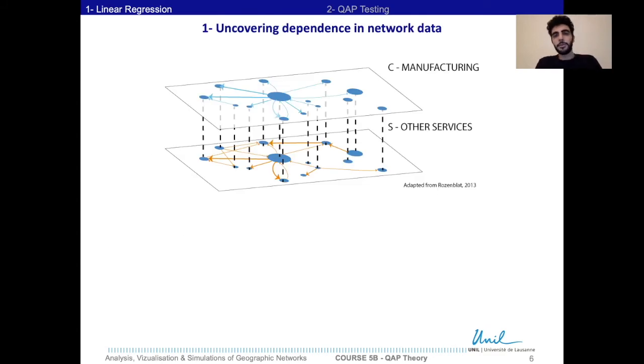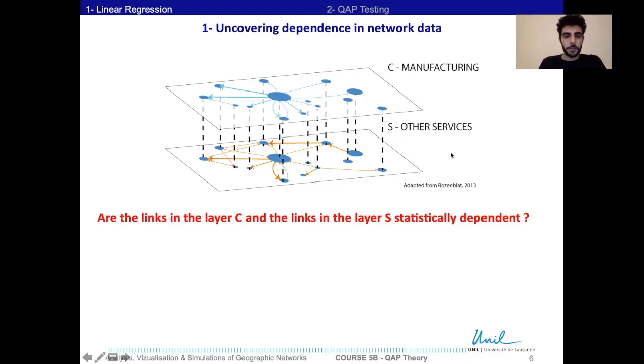Let's go back to the example of the multi-layer network from section A. Here we only took two layers: the layer of manufacturing (C) and the layer of services (S). We want to know if the layers are statistically dependent.